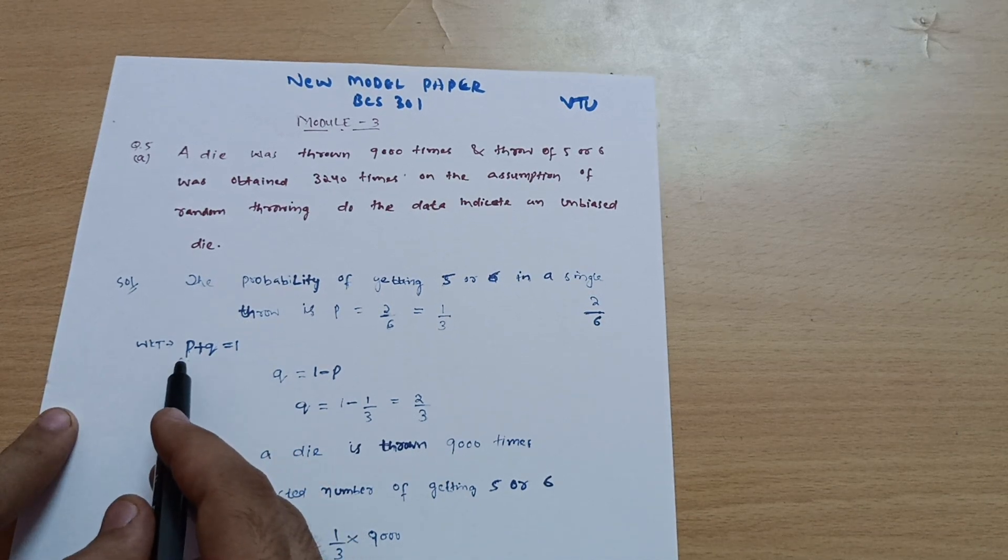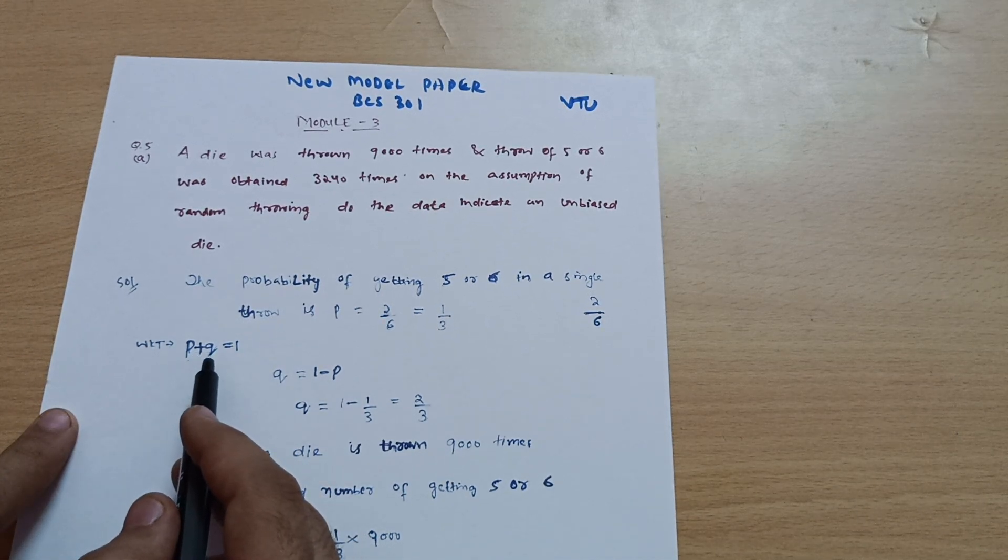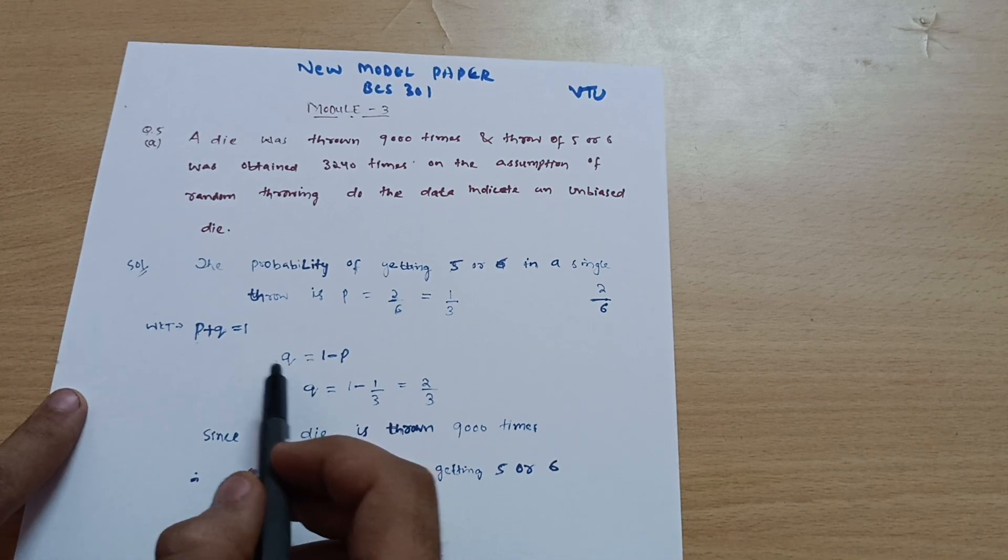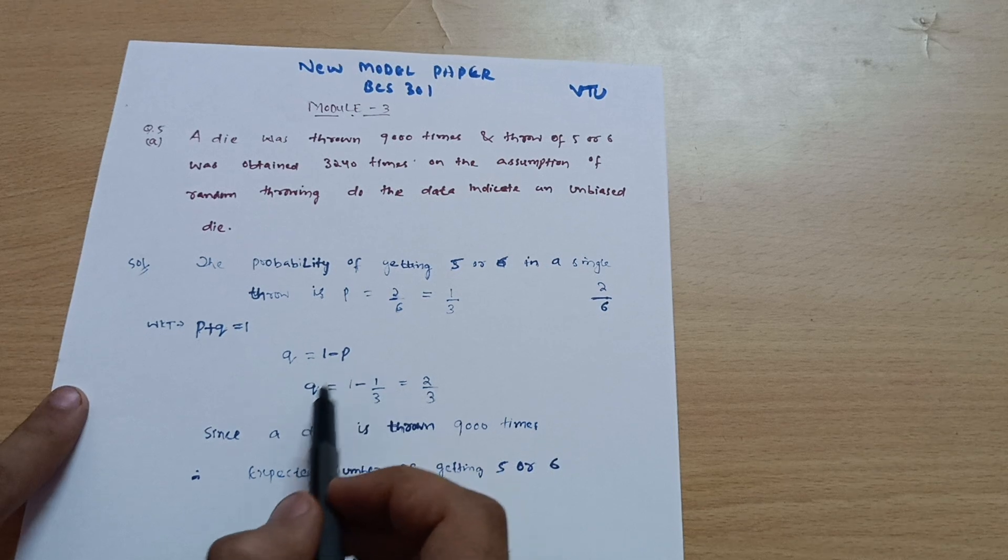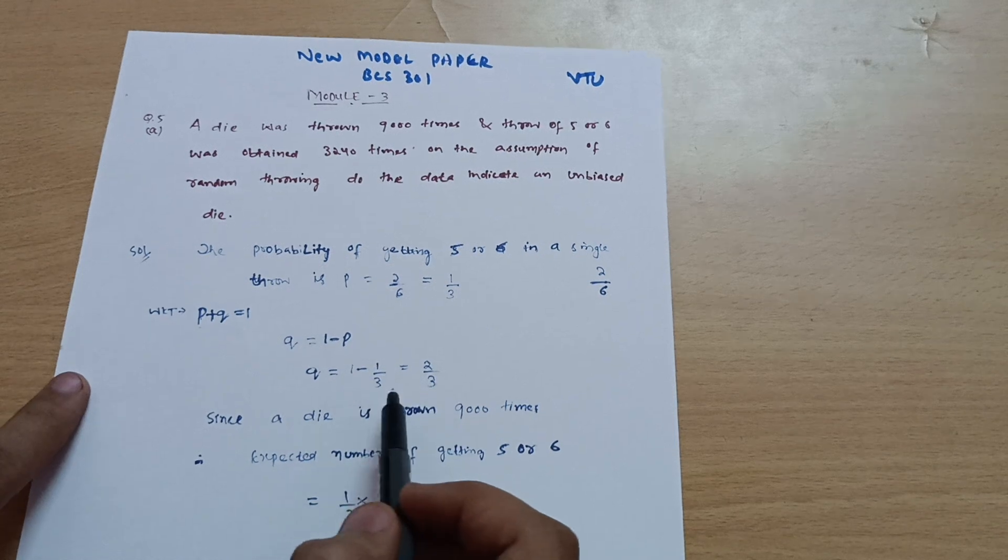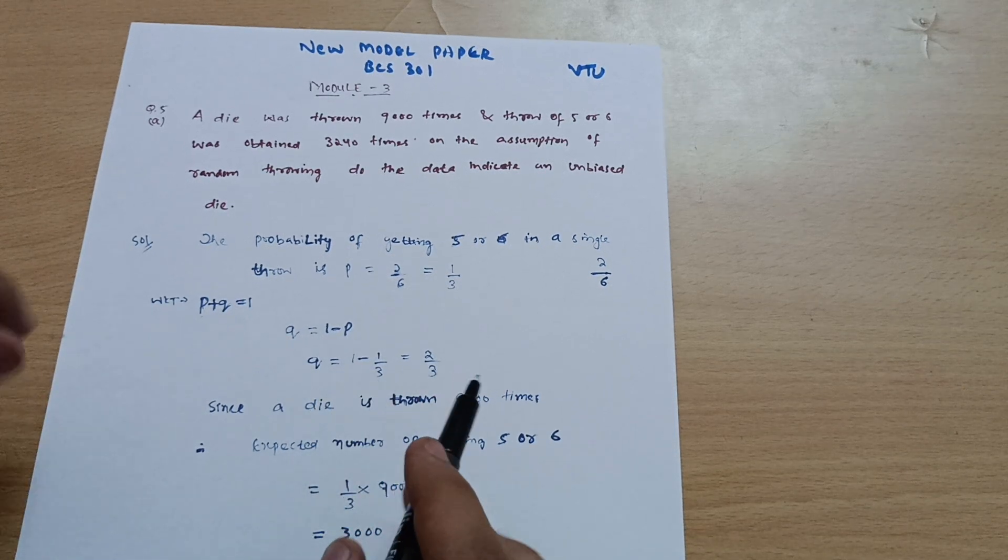You already know the formula P plus Q equals one. This is the probability of an event plus probability of not an event equals one. So I can calculate the Q value from this: Q equals one minus P, so Q equals one minus one by three equals two by three. This will be useful for the formula.